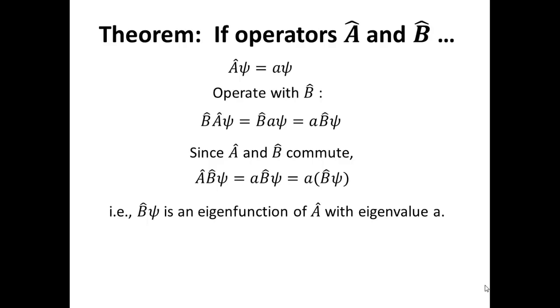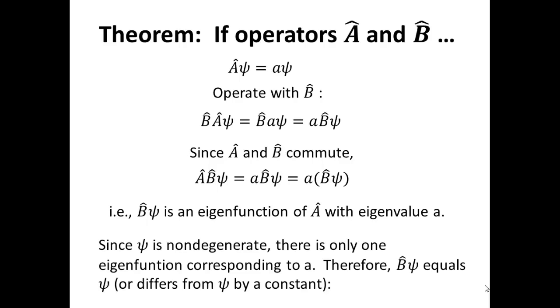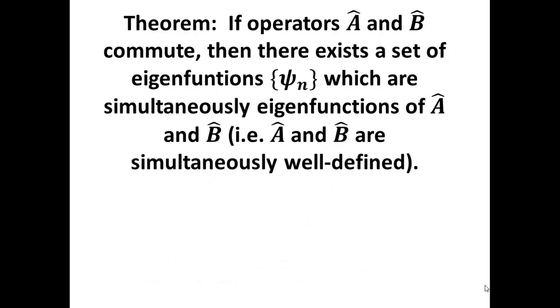If we just look at the equation that we generated, when we act with A on B times psi we get B times psi, B acting on psi back again with eigenvalue A. Since the wave function psi is not degenerate, there's only one eigenfunction that corresponds to that eigenvalue A. And so what this means then is that B operating on psi has to equal psi itself or just differs from psi by some particular constant.